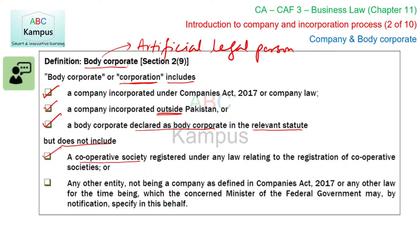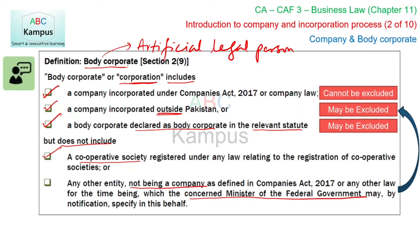آخری point — جو اکثر students کے لیے confusing ہوتا ہے: any other entity not being a company، یعنی company کے علاوہ، and any other law for the time being, with the concerned minister of the federal government — یہاں concerned minister سے مراد finance minister ہے — may by notification specify in this behalf۔ اگر وہ exclude کرنا چاہتا ہے تو وہ کسی بھی body corporate کو exclude کر سکتا ہے، لیکن company کو exclude نہیں کر سکتا۔ یعنی company incorporated outside Pakistan اور body corporate under relevant statute exclude ہو سکتی ہے، لیکن پاکستانی company نہیں۔